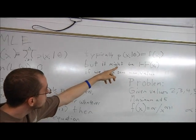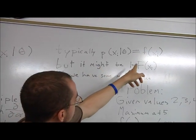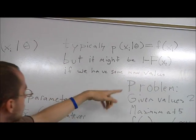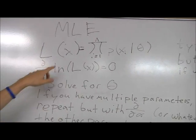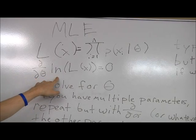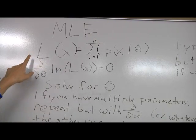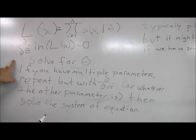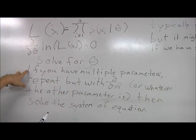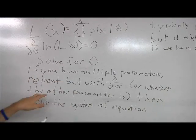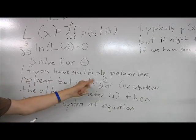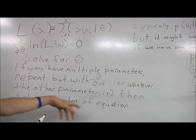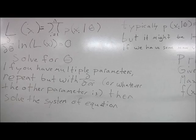So you get this. Then you take the natural log of it, and then you take the derivative with respect to the parameters, and solve for the parameter. If you have multiple parameters, you repeat, but with different parameters for each derivative, then solve the system of equations.